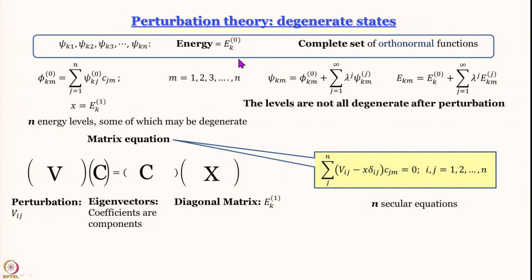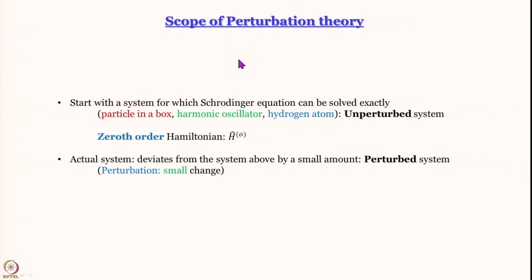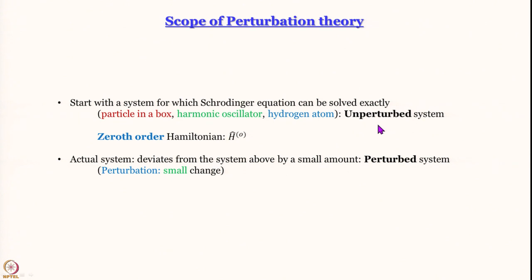The problem with perturbation theory is that its scope is rather limited. It works well when the perturbed system is close to an unperturbed system whose exact solutions are known. But there are many systems not easily relatable to something exactly solvable — many cases where the deviation is definitely much more than the scope of perturbation theory can cover. For such systems we have this elegant method: the variation method.